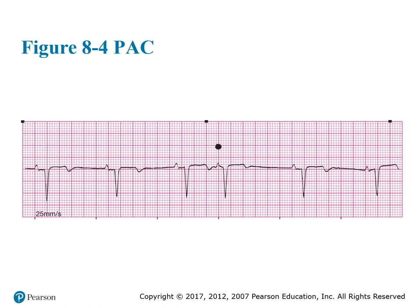This is what a PAC looks like — a premature atrial complex. Basically, we're looking for the premature beat that happens in a PAC. So if you're looking at it, it looks like a normal rhythm going on in the atria, where you do have your normal P waves followed by a QRS. But if you look at this particular rhythm right here, as you can see...